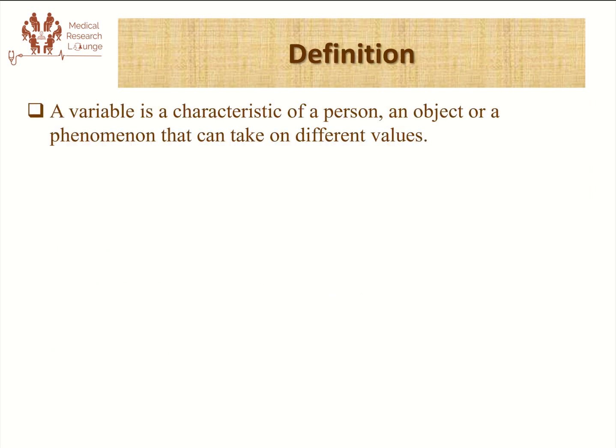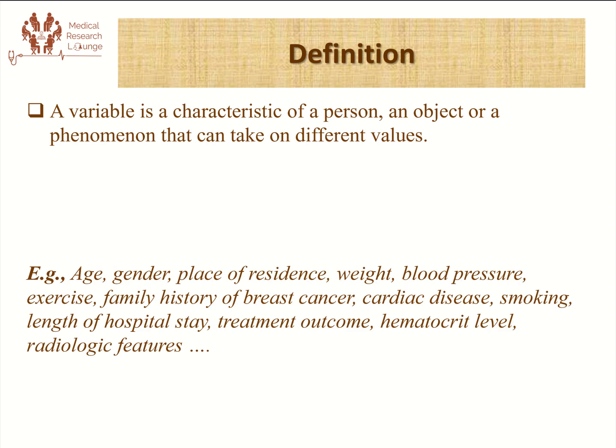To start with, a variable in general is defined as a characteristic of a person, an object, or a phenomenon that can take on different values. For example, all of these characteristics can be treated as variables in healthcare research, like age, gender, place of residence, treatment outcome, family history of some disease condition.